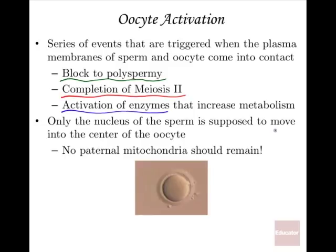Only the nucleus of the sperm is supposed to move into the center of the oocyte. The middle piece and flagellum don't stick around — they often fall off right after. The egg has the potential to destroy those things. If paternal mitochondria stay around and aren't destroyed, that results in a severe disorder affecting muscle tissue. All mitochondria in men and women should come from their mother, since they were in the cytoplasm of the egg cell.